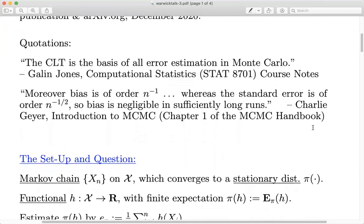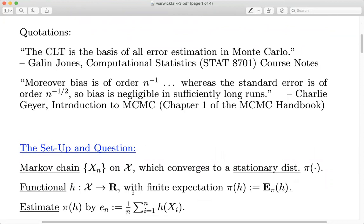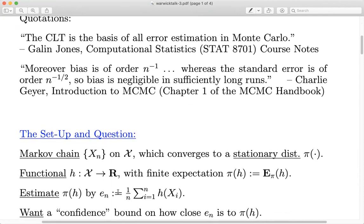In the basic MCMC setup, we have a Markov chain with stationary distribution π, with irreducibility and aperiodicity, so it converges in distribution to π. We have a functional h from the state space to the reals with expected value π(h). The typical estimate E_n is just the average of the function values over the Markov chain — possibly after a burn-in. What everyone wants to know is how close E_n, based on n samples, is to π(h), the expected value we're hoping to converge to.